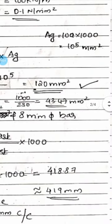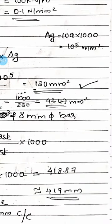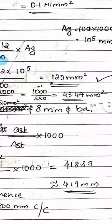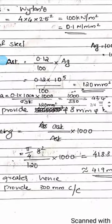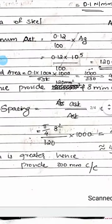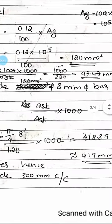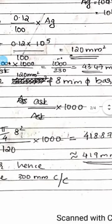The gross area AG equals thickness into design width. With thickness of 0.1 m and width of 1 meter, AG equals 0.1 m into 1 m, which gives 100 into 1000, equal to 10⁵ mm². Therefore, AST equals 120 mm².